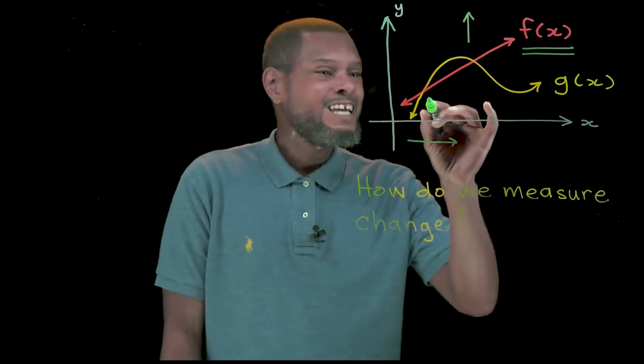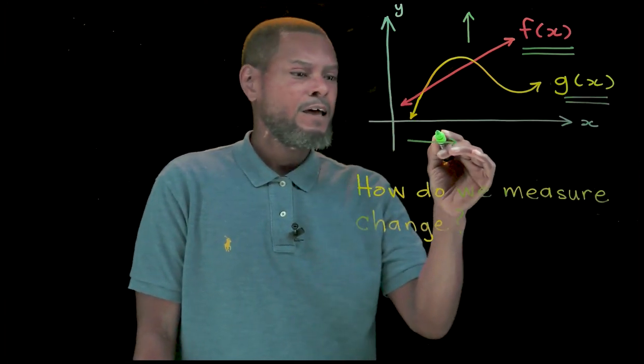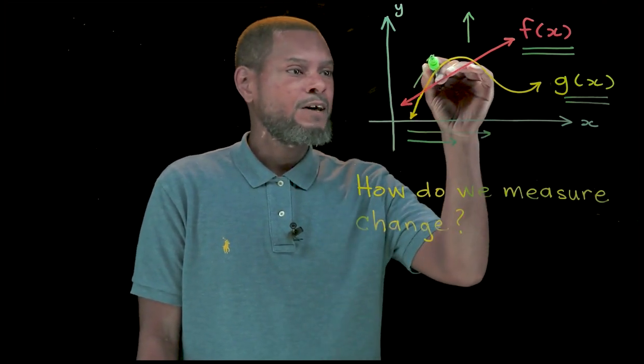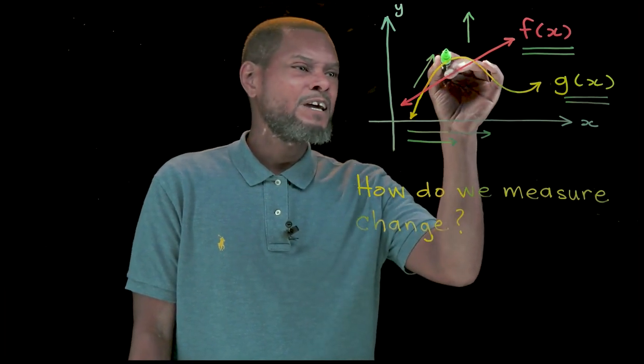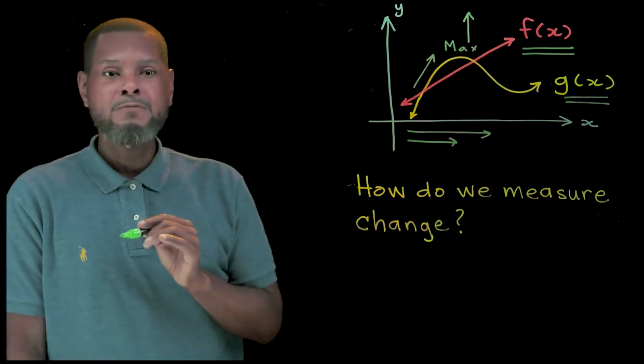But when we look at the yellow graph, g of x, as we go further to the right, the values change. But then it reaches a point where it's a maximum.